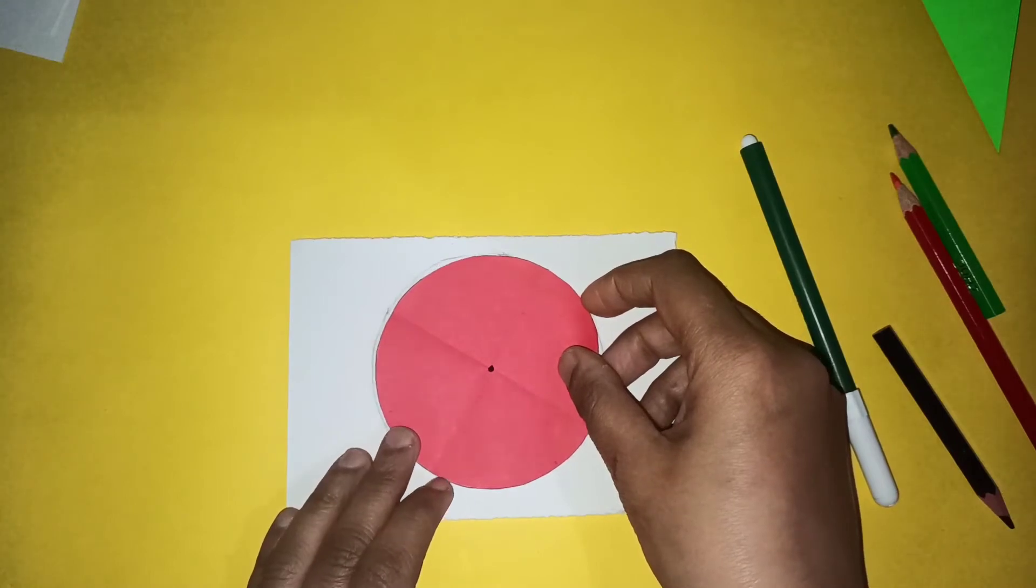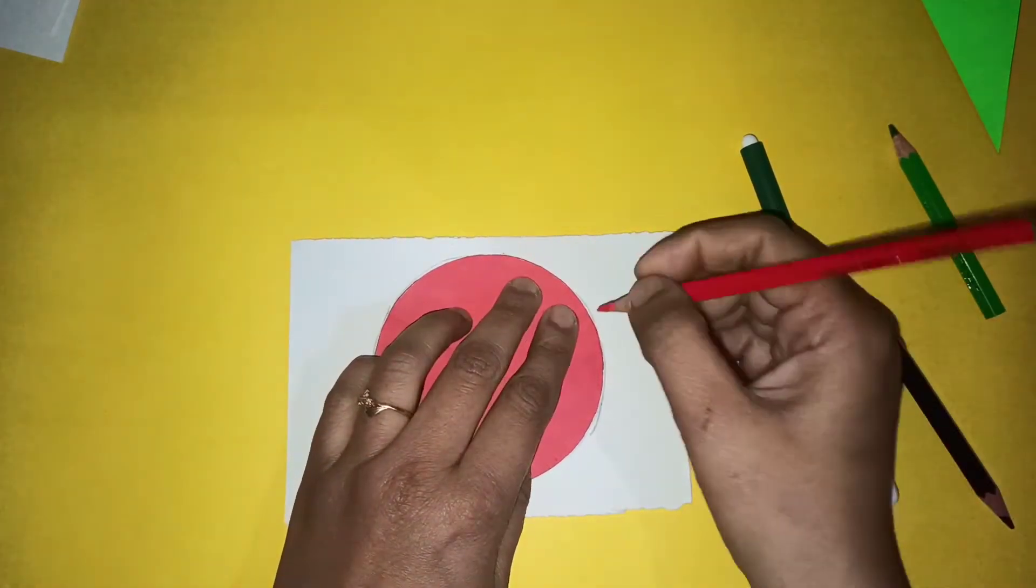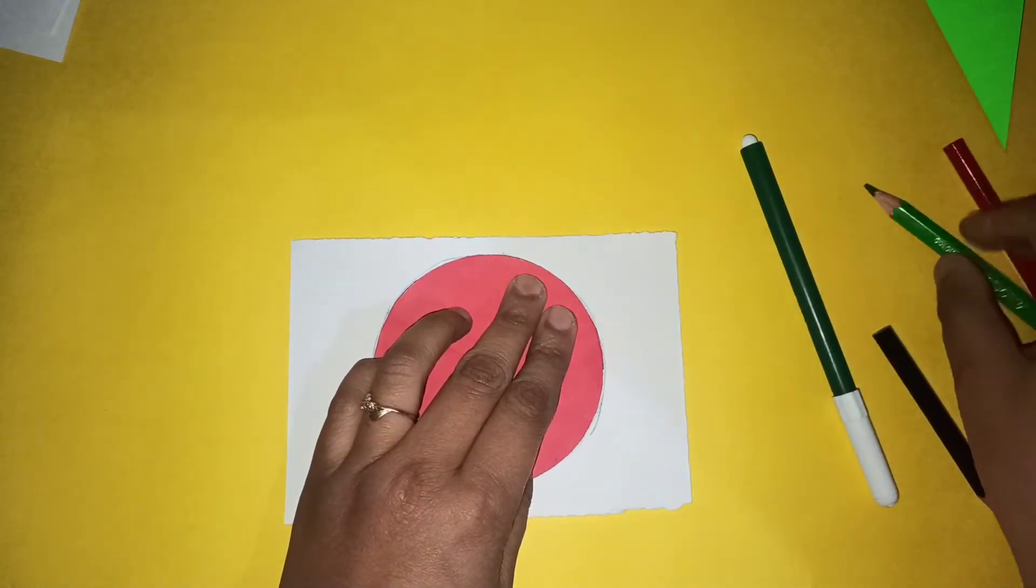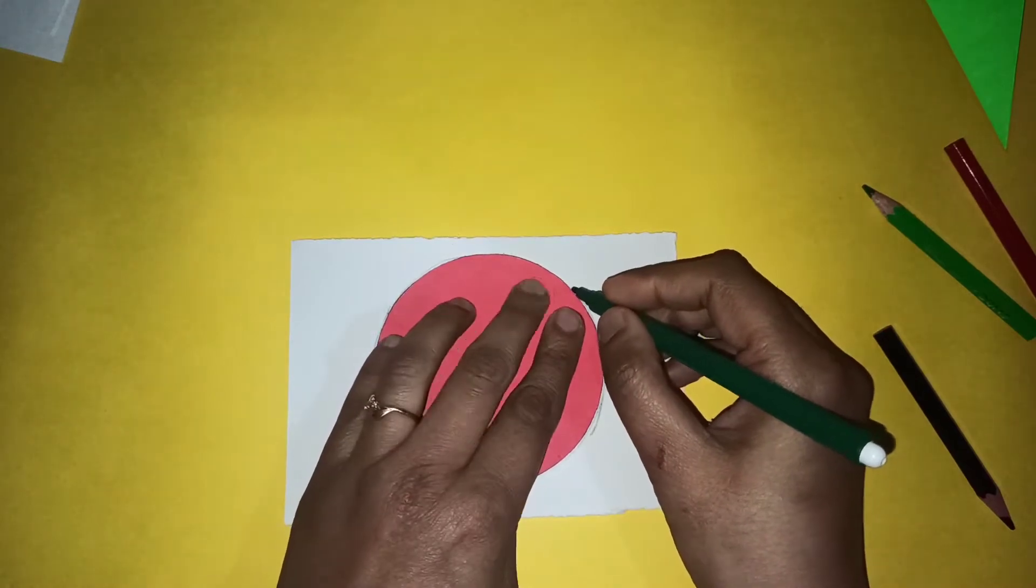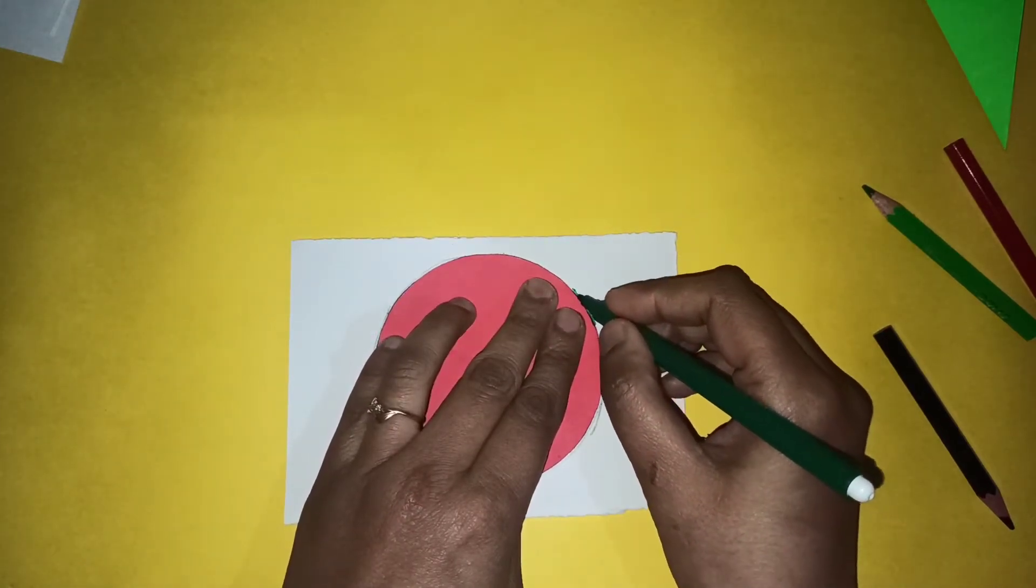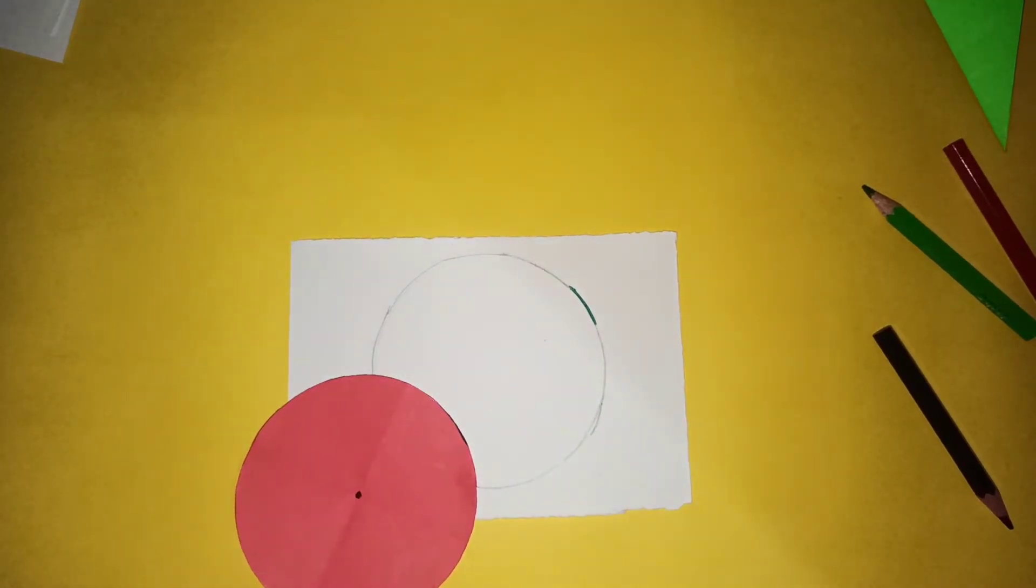Now if I draw a part of the circumference, this green line, a part of the circumference, is known as the arc.